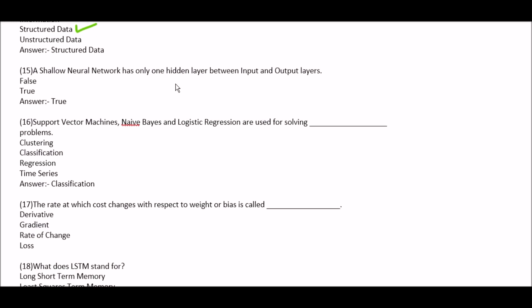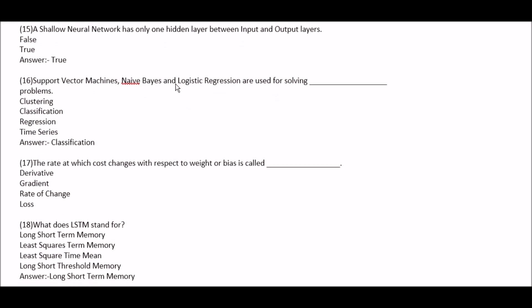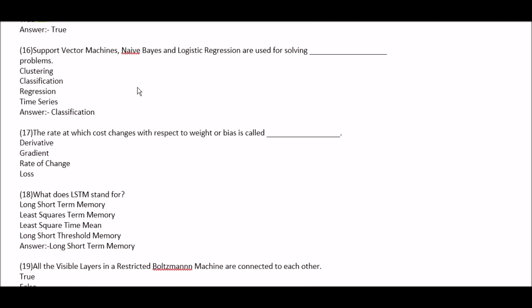A shallow neural network has only one hidden layer between input and output layer — true or false? This is true. Next question: support vector machines (SVM), Naive Bayes, and logistic regression are used for — option A: clustering. Option B: classification. Option C: regression. Option D: time series. Right answer is option B, classification. SVM, Naive Bayes, and logistic regression are used for solving classification type of problems.